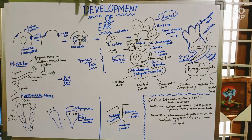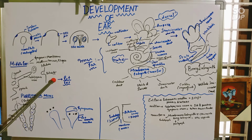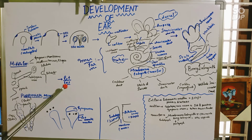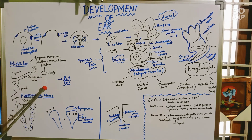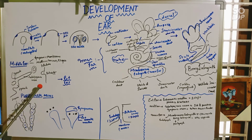Coming to the middle ear anomalies: the ossicles — malleus, incus, and stapes — may be abnormal, or they may be underdeveloped, or they may stick to one another or to the wall. The stapes and the margins of the fenestra vestibuli may be affected. The facial nerve may bulge into the middle ear, because the facial nerve supplies the first pharyngeal arch. And the stapedial artery may persist — it should be present only in fetal life, but it may be persistent.